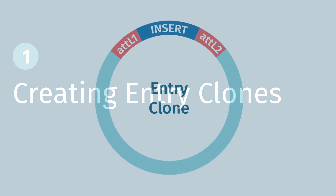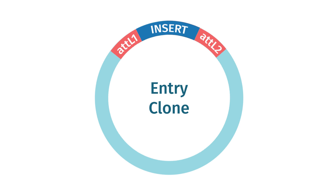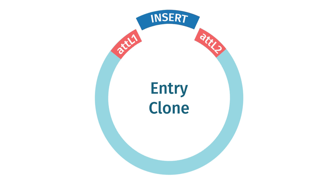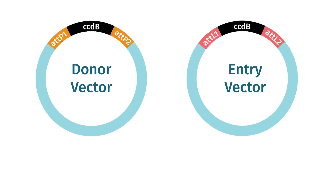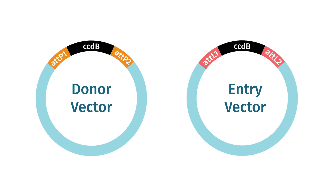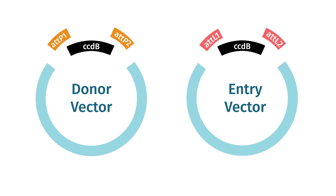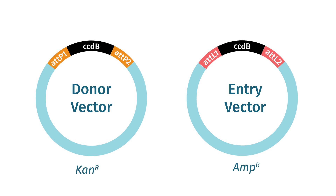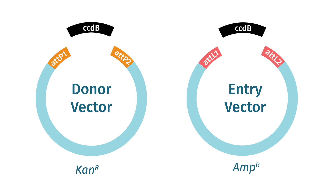The first step in gateway cloning is the creation of an entry clone through the capture of a single fragment of interest between AT-L sites using either an entry or donor vector. Entry and donor vectors are purpose-built gateway cloning vectors containing required AT sites, antibiotic resistance genes, and a CCDB cassette to allow for positive and negative selection.